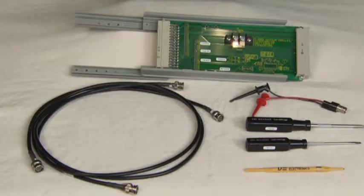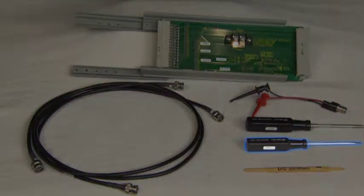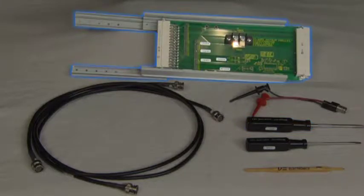The following tools will be required to tune the RF preselector: a small slot bladed screwdriver, Phillips screwdriver, EC48RD extender card, and a tuning tool.